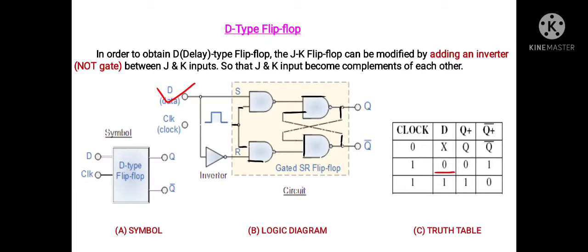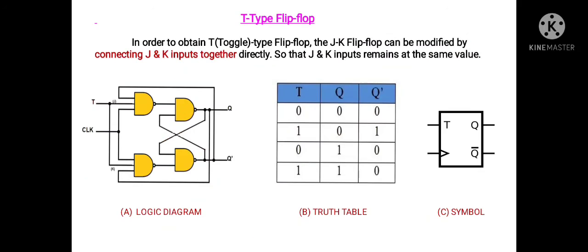Whatever data is applied at the input appears at the output with some delay — with some postponement or deferment. In simple language, the output is delayed. That is why D stands for delay. Looking at Figure A, this is the symbol for the D-type flip-flop, showing the D input, clock signal, output Q, and complement Q-bar. This is the circuit diagram and truth table of the D-type flip-flop. Now we move to the second topic: the T-type flip-flop.